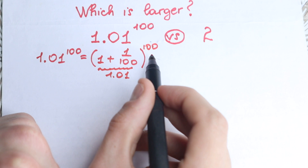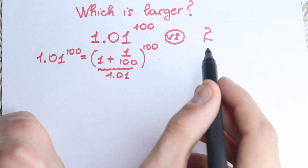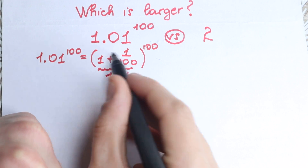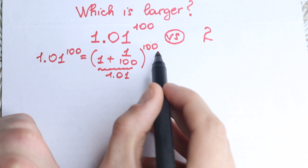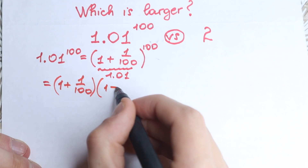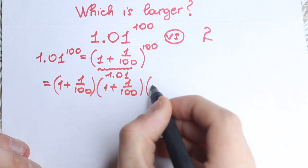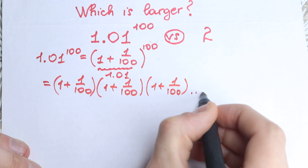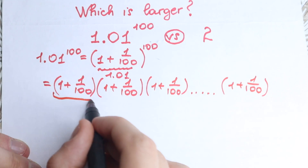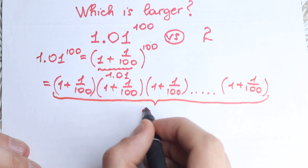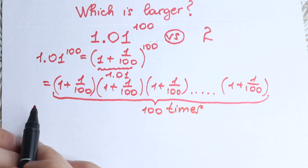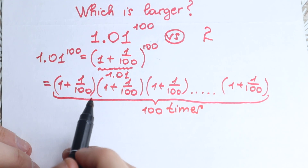What do we do next? We need to know about powers a little bit. If we have, for example, 2 cubed, you multiply 2 three times: 2 times 2 times 2. Right here we have an expression in parentheses, and we raise it to the power 100, so we have (1 + 1/100) multiplied by itself 100 times. This was information about our left expression, 1.01 to the power 100.